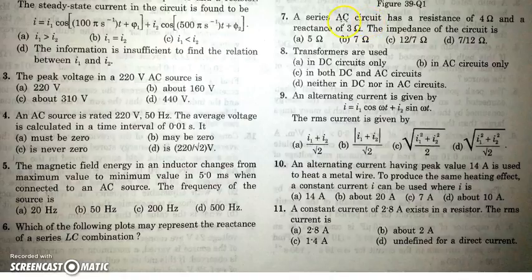In the seventh question, there is a series AC circuit which has a resistance of 4 ohm and reactance of 3 ohm. Impedance is nothing but square root of resistance squared, 4 square plus square of the reactance, 3 square, which gives you 5. The next question says transformers are used as transformer is based on the principle of mutual inductance, which can occur only when the current or voltage is changing. So it can be used only across AC circuits.